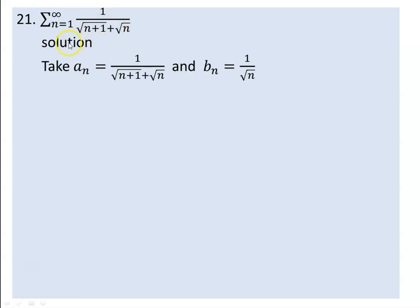Now take 1 over square root of n plus 1 plus square root of n. We need to confirm the terms are positive — all terms are positive.